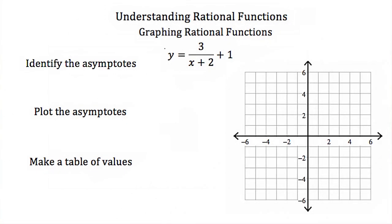So now that we know how to find our asymptotes, let's talk about graphing a rational function. Here we're given y is equal to 3 over x plus 2 plus 1. First step is to identify our asymptotes. Our vertical asymptote is what makes our denominator equal to 0, so our asymptote would be x is equal to negative 2. If I plug in negative 2, that makes my denominator 0 and this function would not make any sense. Now again, there's no way I can make this first term equal to 0, so we're always going to have 1 plus some number, which means y can never equal 1. So we have the asymptote y is equal to 1. I've found my asymptotes and my next step is to plot them.